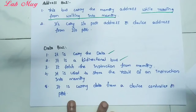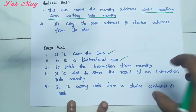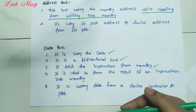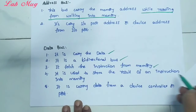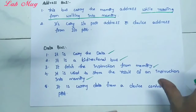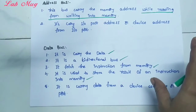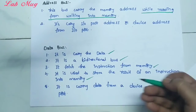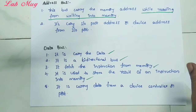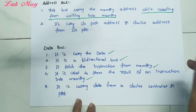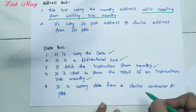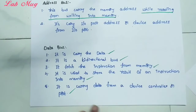The data bus is bi-directional. First, it fetches the instruction from memory - it gets the instruction from memory. Then the data bus performs the work. Next, it is used to store the result of an instruction into memory - once processing is done, the result is stored back. It also carries data from your device controller or port. So all these operations are performed through the data bus.